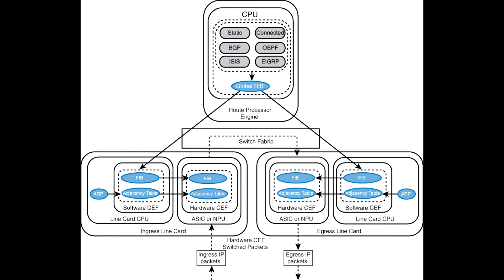In the control plane, the RIB serves as the central repository for routing information. The control plane is responsible for the maintenance and management of this comprehensive routing table. It collects and stores information about the available network paths, costs, and attributes. The control plane evaluates routing policies, makes route selection decisions, and updates the RIB accordingly.